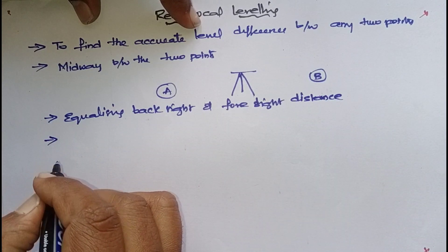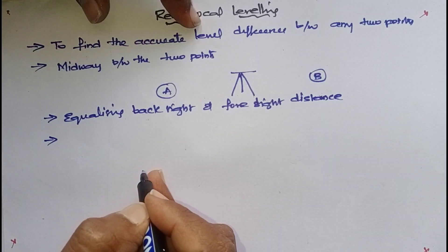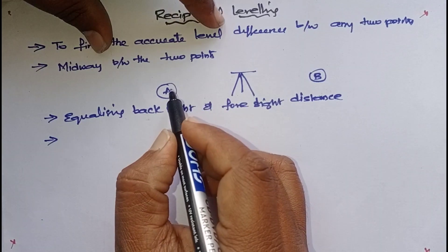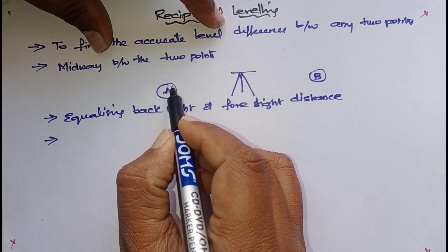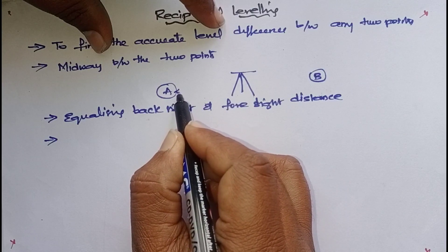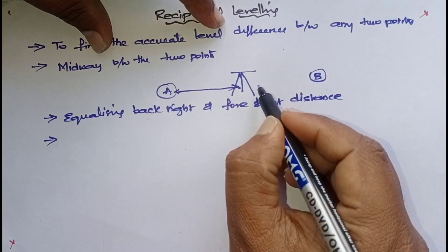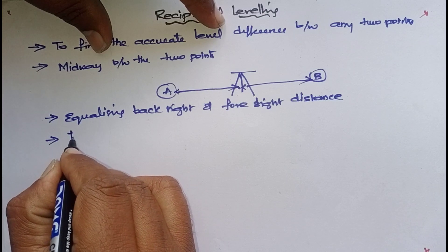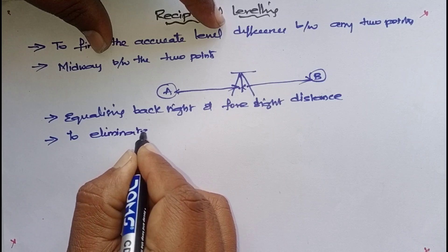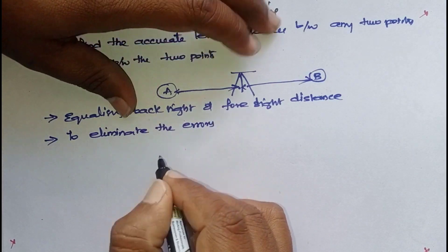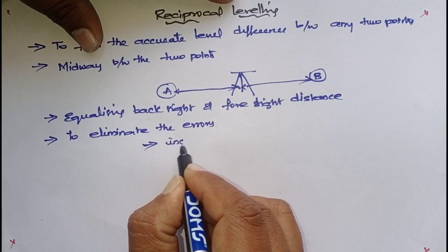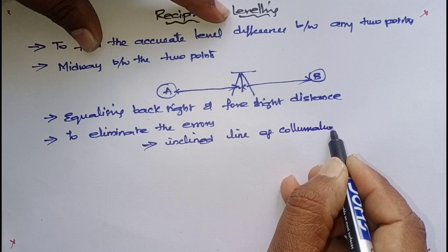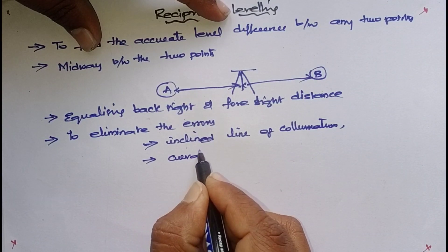But practically, this is not possible everywhere on site. The purpose of equalising backsight and foresight distance is to eliminate errors. What type of errors can be eliminated? It eliminates the inclined line of collimation error, and the error due to curvature and refraction can also be reduced.